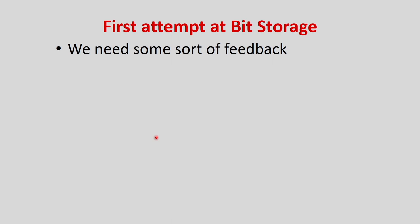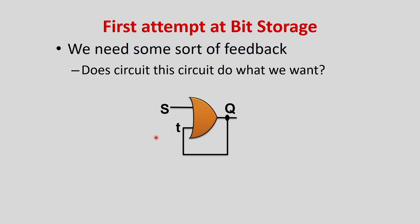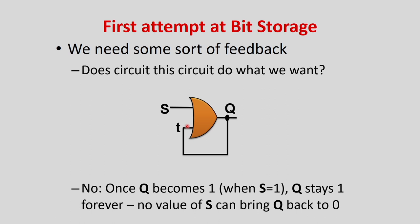Even with feedback, the OR gate does not work. When S = 0, T = 0, Q = 0 initially. When S = 1, Q becomes 1; Q is fed back as T, so T = 1. As T = 1 and Q = 1, it continues to be 1. There is no way to change Q output back to 0. If you press the call button the light switches on, but there is no way to switch it off.